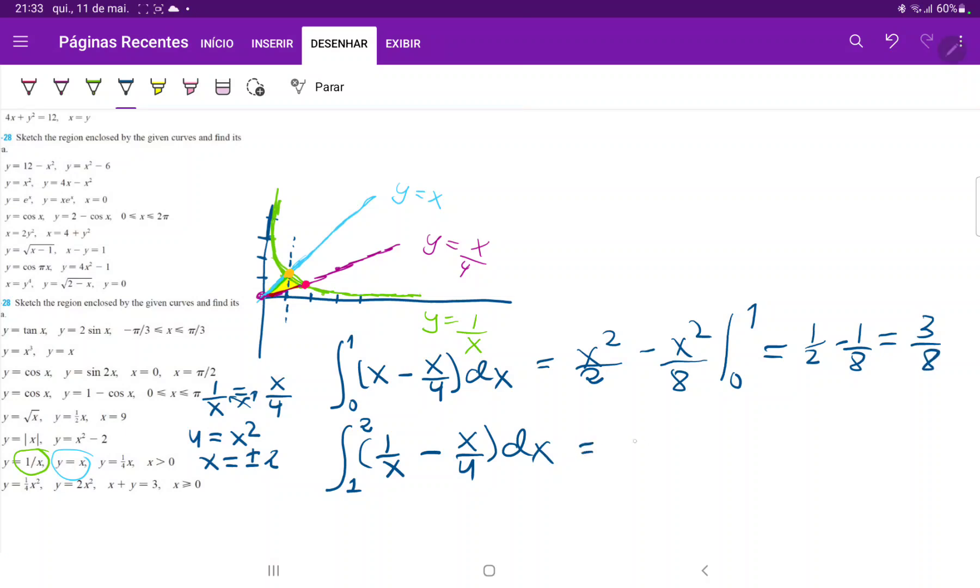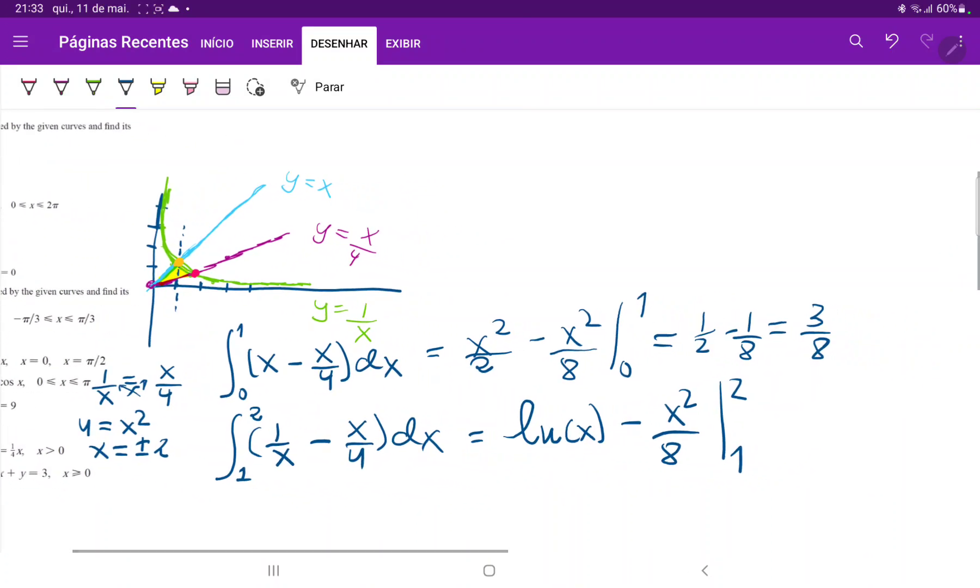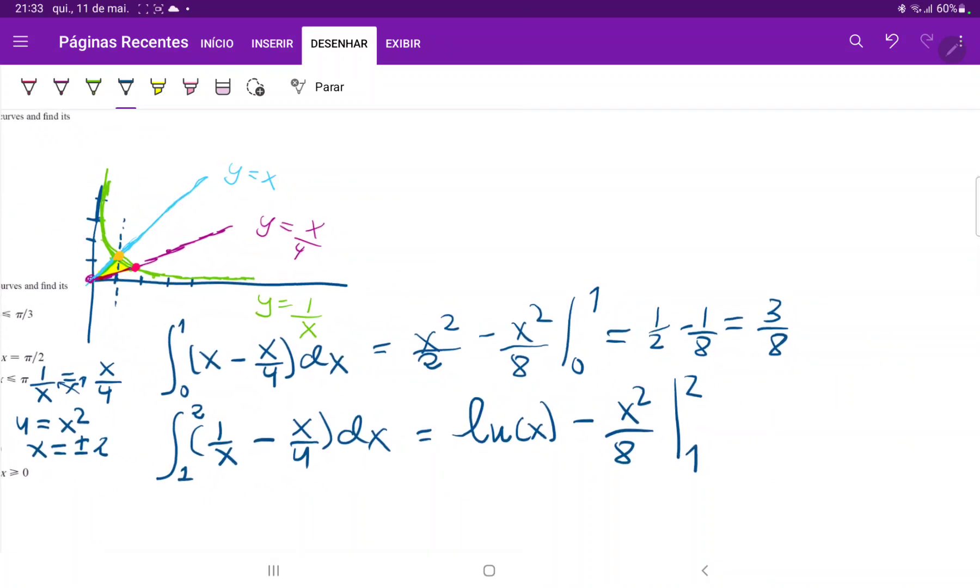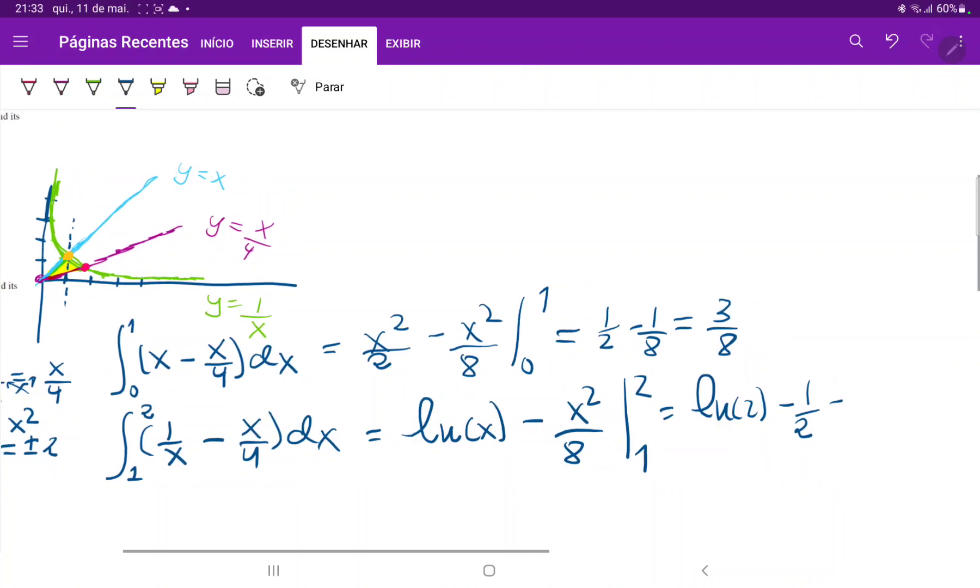Now let's do our second integral. So for this one, we have ln of x minus x squared over 8 evaluated from 1 to 2. So when we apply the boundaries here, let's apply the upper boundary. So that is ln 2 minus 2 squared over 8. So that is minus 4 over 8, which is minus 1 half. And then minus ln 1, and then lastly, minus minus 1 over 8, plus 1 eighth.